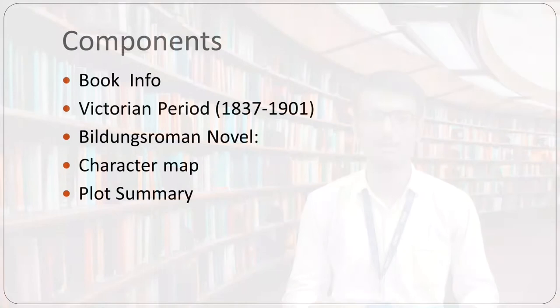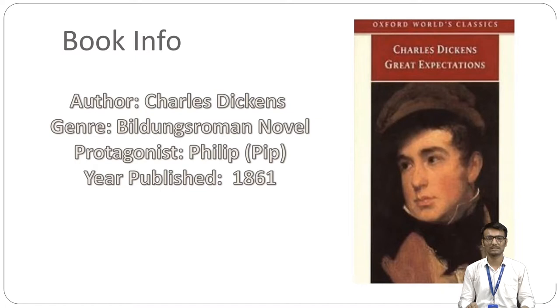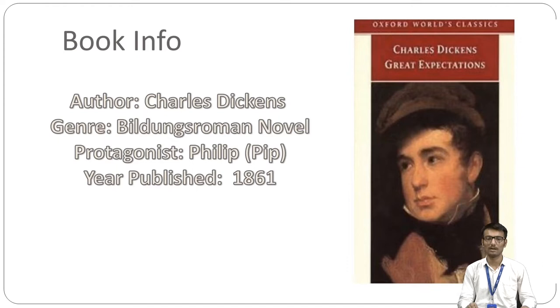In today's session, we are going to discuss the following things: first, we'll start with book info, then characteristics of the Victorian period, then we'll understand what is a Bildungsroman novel, then the character map of the novel, and the plot summary of the text. The author Charles Dickens introduced the Bildungsroman novel. The protagonist of this text is Philip Pirip, popularly known as Pip, and it was published in 1861. It is adapted in various movies in England, outside Europe, and in Bollywood it is adapted into a film called Fitur.